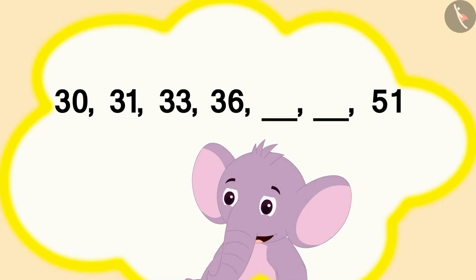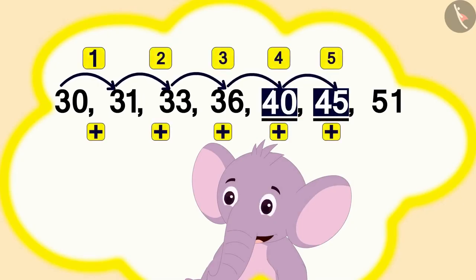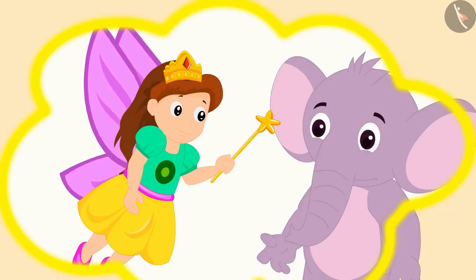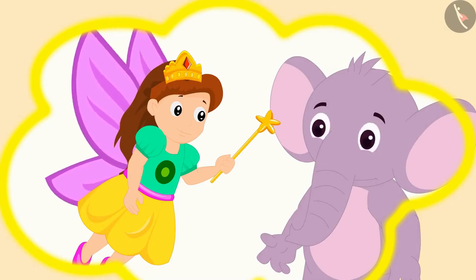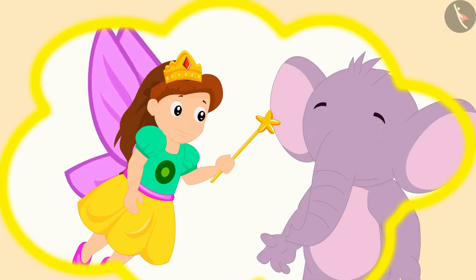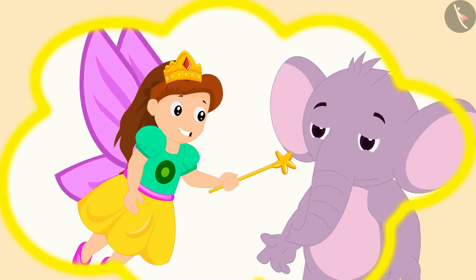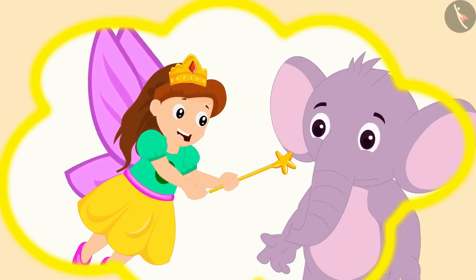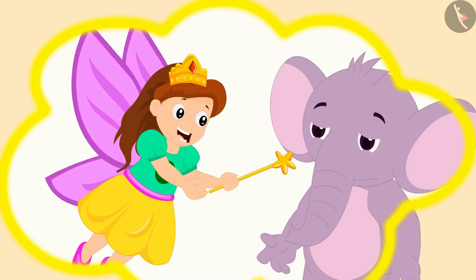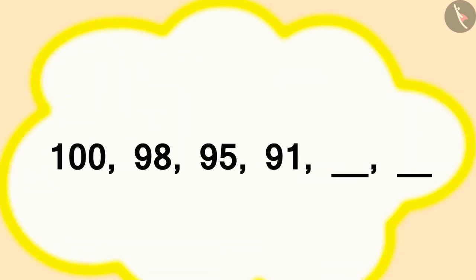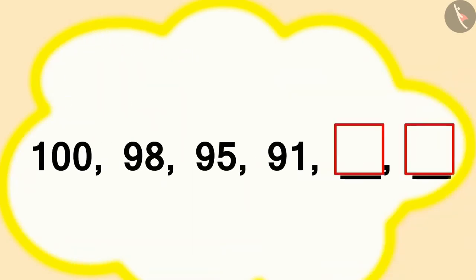Appu also filled in the blanks of this growing pattern using the process of addition like us. The angel became happy. She said to Appu, well done, Appu. Your answer is absolutely correct. Now, all you have to do is fill in the blanks of this number pattern. And then, that gift will be yours.